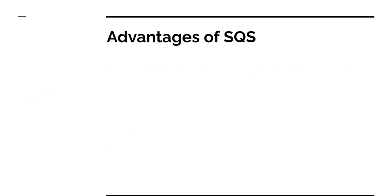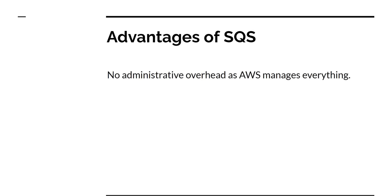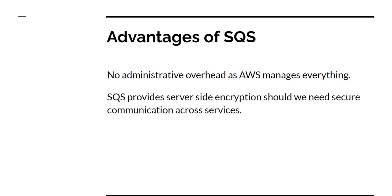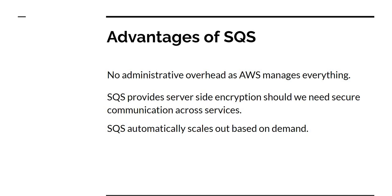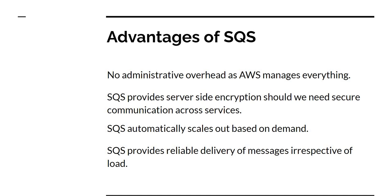Next let's find out what the advantages of using SQS are. The first advantage, just like any other serverless feature, is there is no administrative overhead as AWS manages everything. The second advantage is SQS provides out-of-box server-side encryption should we need to secure communication across different services. Thirdly, SQS automatically scales out based on demand, and finally SQS provides reliable delivery of messages irrespective of the load. These four are the key advantages of using SQS.